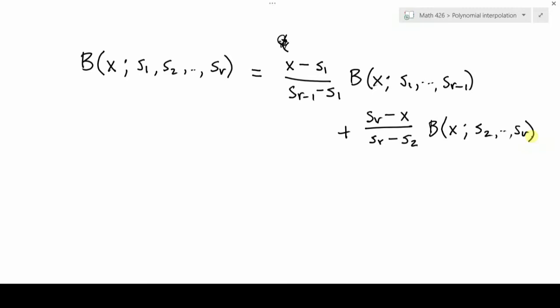So we take two b-splines, each one defined on a sequence of r minus one knots. Combine them in this way, and you get something that depends on all r of these knots. And because we're multiplying by a linear function of x each time, when we started with a linear one, we got piecewise quadratic. Then we take the piecewise quadratic ones, and we'll get piecewise cubic.